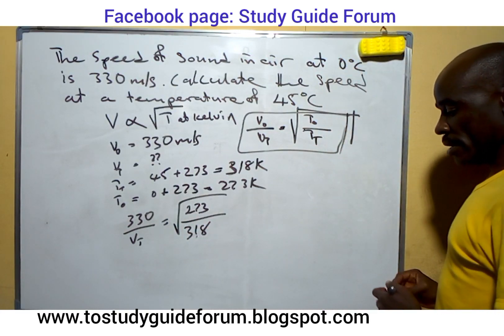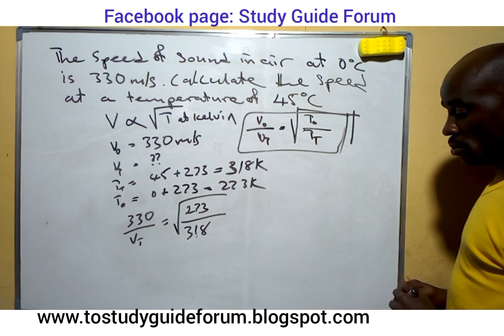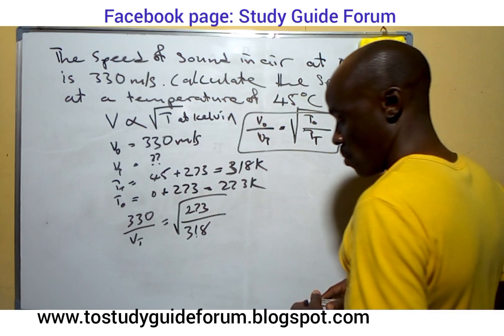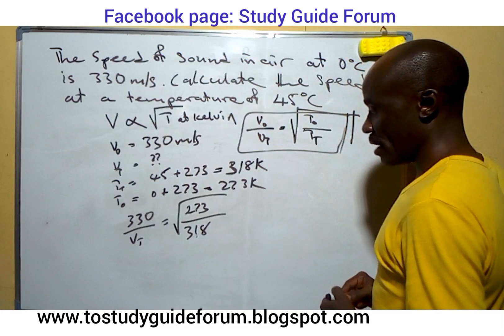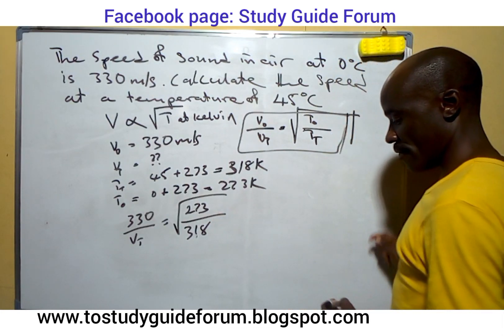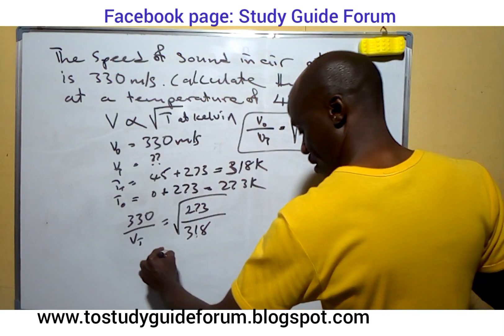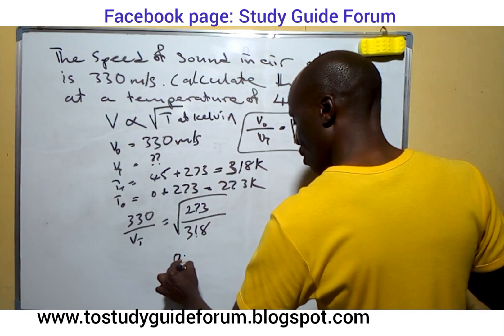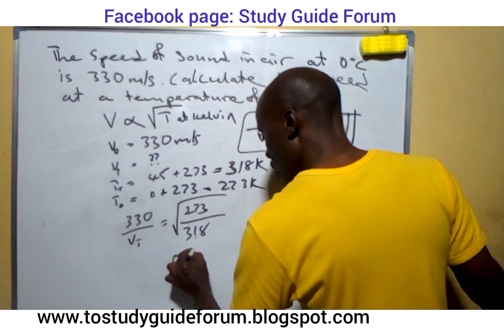So we go ahead. What we do here now, if we divide 273 by 318, we will have 0.8585.